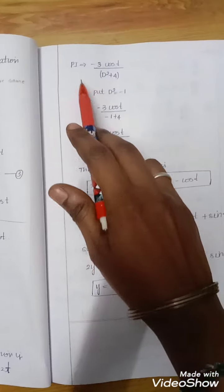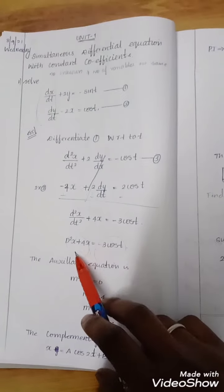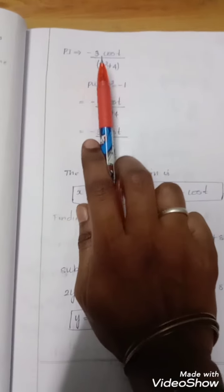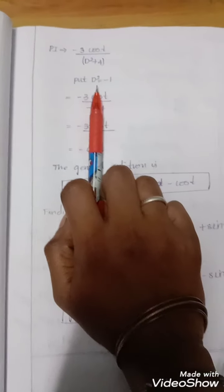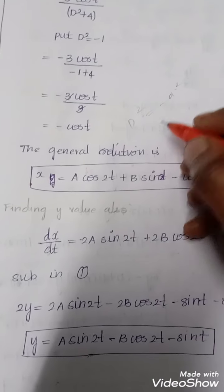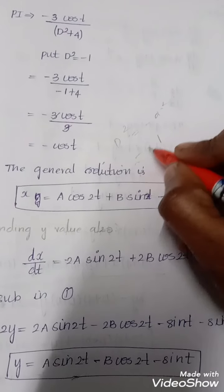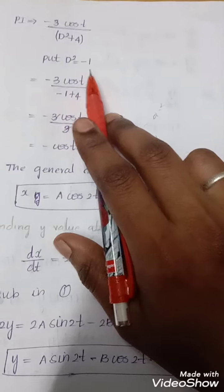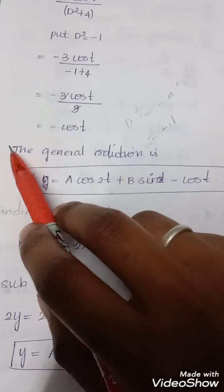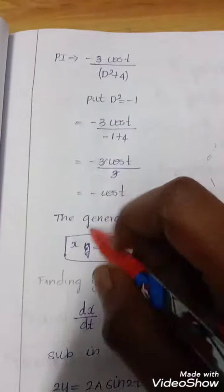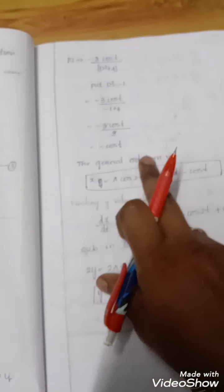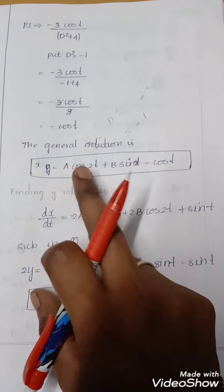The particular integral is PI = -3cos(t) / (D² + 4). Since the function is trigonometric, we substitute D² = -1 (because D² = -a² where a = 1). This gives PI = -3cos(t) / (-1 + 4) = -3cos(t) / 3 = -cos(t). So the general solution is x = A·cos(2t) + B·sin(2t) - cos(t).